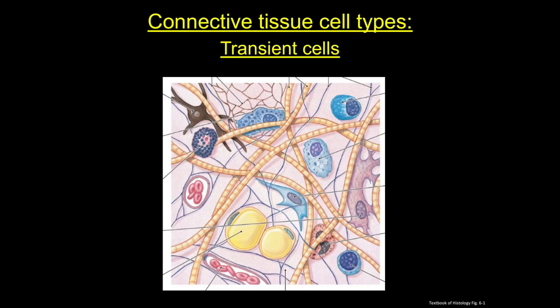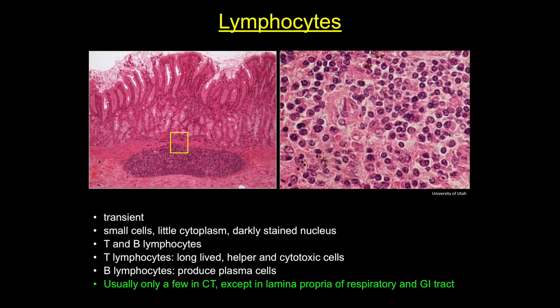In addition to these more permanent cells, there are a number of cells that are transient in connective tissue, and these all happen to be immune cells: lymphocytes, plasma cells, and neutrophils and eosinophils. First, the lymphocyte — a small white blood cell with a darkly staining nucleus and very little cytoplasm. There are two types: T and B lymphocytes, that have different functions in the immune response. There are usually a few lymphocytes in connective tissue, although exceptions include the respiratory tract and the GI tract. In the image on the left, you can see a large aggregate of small dark cells below the epithelium, and in the enlarged image on the right, you can see that these cells are mostly lymphocytes.